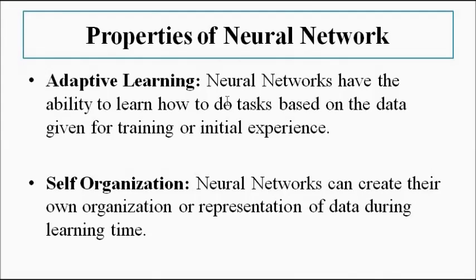The first property is adaptive learning. Adaptive learning basically means learning how to accomplish the tasks the neural network is designed for, specifically according to the data given during the training period. For example, when we go for a new job, the first few months are the training period where we are made to understand how to do things and adapt to the new environment. Similarly, a neural network acquires those skills during the learning or training period.